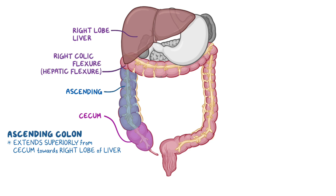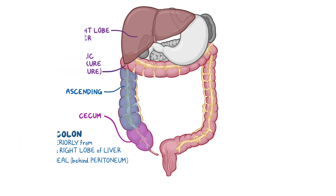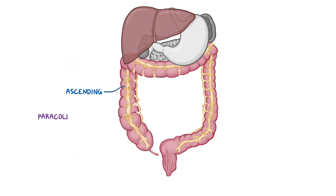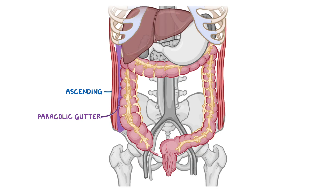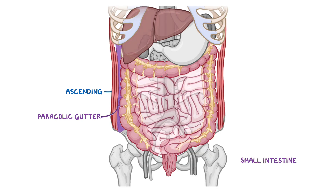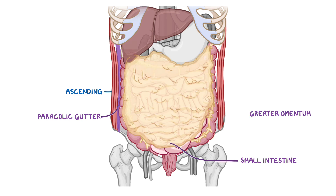The ascending colon is positioned retroperitoneally, therefore just behind the peritoneum. Laterally, between the ascending colon and the lateral abdominal wall, is a shallow trench covered by parietal peritoneum called the right pericolic gutter. Medial to the ascending colon is the small intestine, while anteriorly is the greater omentum.